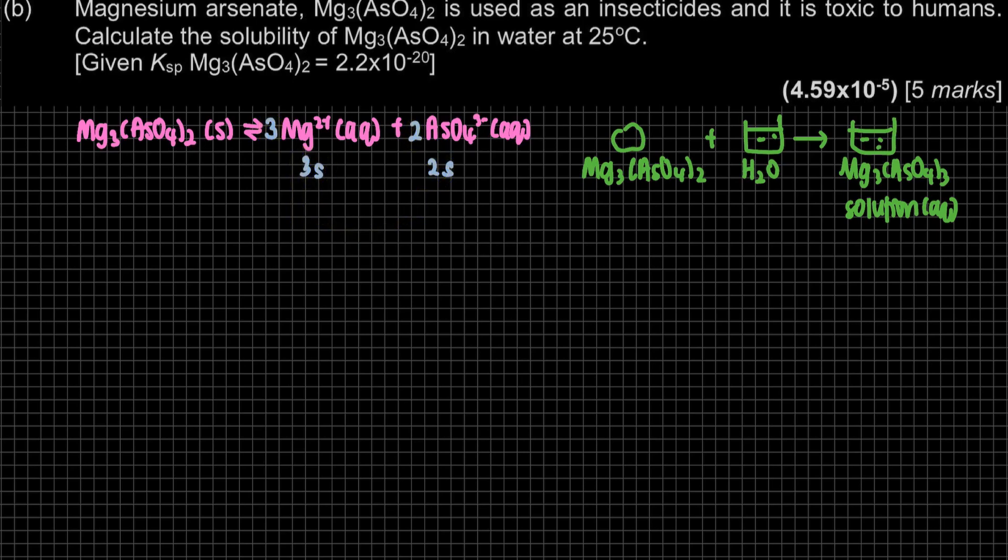Instead of you doing the ICE table, the equilibrium you just can write down based on the changes, based on the stoichiometry here. 3S, 2S. So we have to find the value of S. How do we find out the S? We have the Ksp. What is Ksp? K must be the product divided by reactant, must be your gas or aqueous.